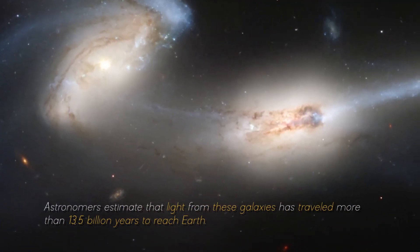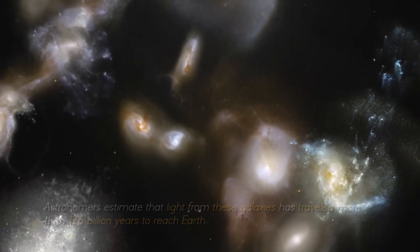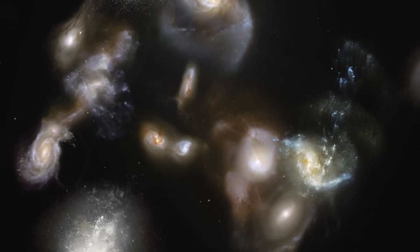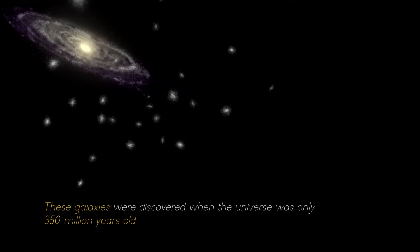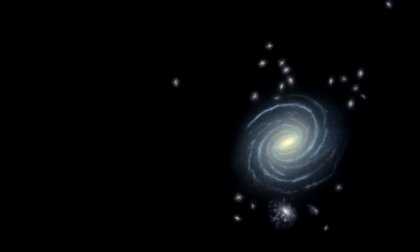Astronomers estimate that light from these galaxies has traveled more than 13.5 billion years to reach Earth, giving us a glimpse into the distant past of the universe. These galaxies were discovered when the universe was only 350 million years old, shedding light on how quickly the first generations of galaxies emerged.